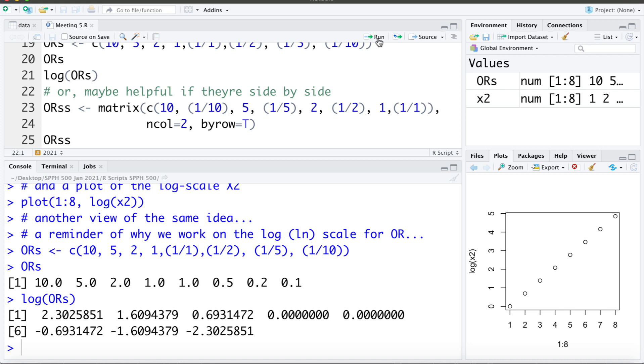We can see that odds ratio of 10 on the log scale comes to be positive 2.302 and the odds ratio of 1 tenth on the log scale becomes negative 2.302. Or it might be helpful I'm going to take those same odds ratios but put them side by side so we can see it a bit better.